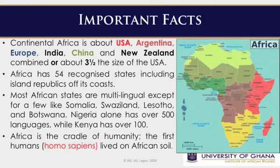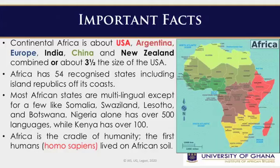Continental Africa is about the size of the USA, Argentina, Europe, India, China, and New Zealand combined, or about three and a half times the size of the USA. Africa has 54 recognized states, including island republics off its coasts. Most African states are multilingual, though exceptions include Somalia, Swaziland, Lesotho, Rwanda, and Botswana. For example, Nigeria has over 500 languages, while Kenya has over 100 languages.